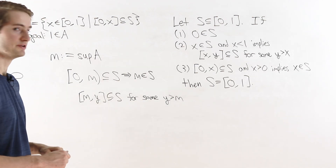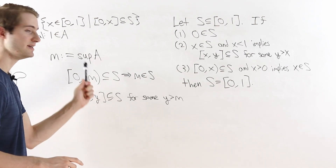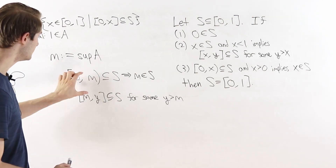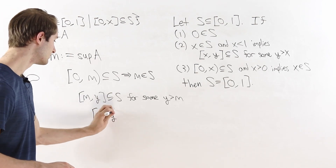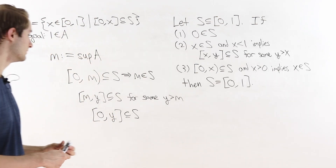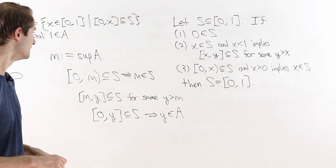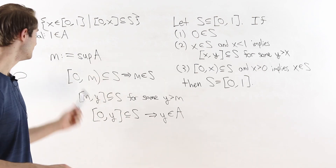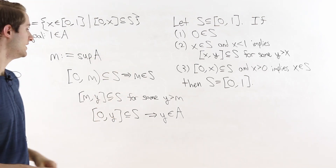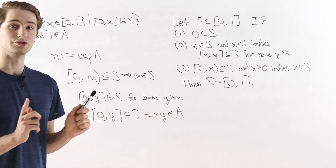Let's put all of these conditions together. The half-open interval [0, m) is contained in S, and the closed interval [m, y] is also contained in S. Putting these two statements together, the entire closed interval [0, y] is contained in S. By definition that implies y is an element of A. But that's a problem, because we said m was the supremum of A — every element of A has to be less than or equal to m, but now we have a value bigger than m that's in A. That's a contradiction.